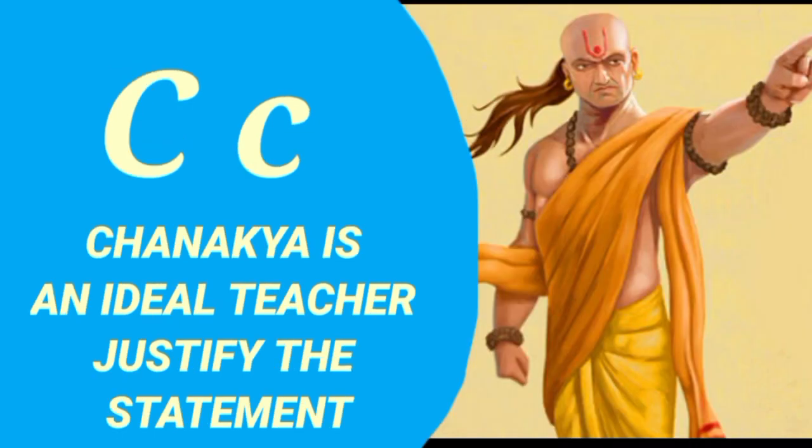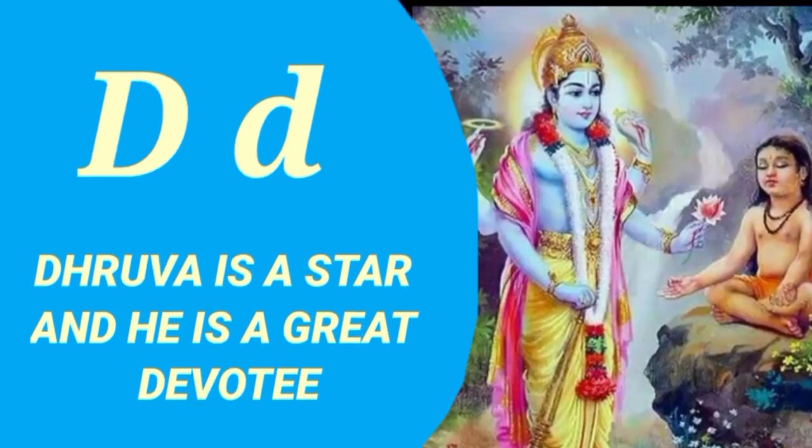C is for Chanakya, who is an ideal teacher. D is for Dhruva, who is a star and a great devotee.